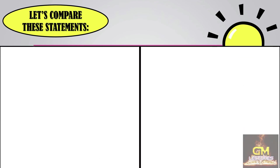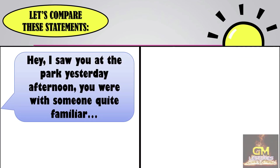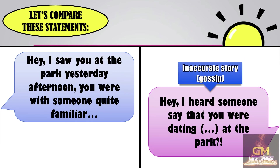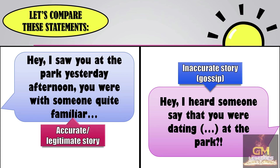With this in mind, let's compare these two statements. First: 'Hey, I saw you at the park yesterday afternoon. You were with someone quite familiar.' Next: 'Hey, I heard someone say that you were dating this person at the park.' Based on this example, the second statement is considered to be somewhat inaccurate — a gossip — because the speaker is merely relying on a story told to him by another person without actually knowing whether this event really happened. The first statement would seem more accurate because the speaker himself is verifying that he saw that person at that particular event.